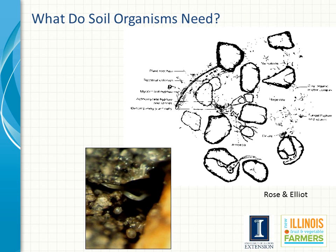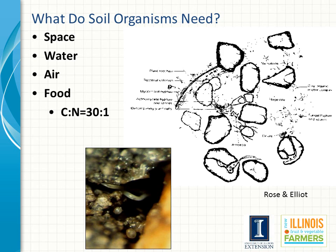If we want to increase soil quality, we need to focus on the biological community and what they need. They need space to move around in — porosity and structure are important. Water is critical, as many creatures live in the water films around each particle, so we try to maintain a moist, humid environment. Air is critical for these organisms to grow, so having open pore space is important. Most importantly, the food we can influence is the organic matter we add back into that soil every year for organisms to decompose and use. Research has found that bacteria decomposing material have an optimum carbon to nitrogen ratio of about 30 carbons to 1 nitrogen for most efficient decomposition of organic materials.